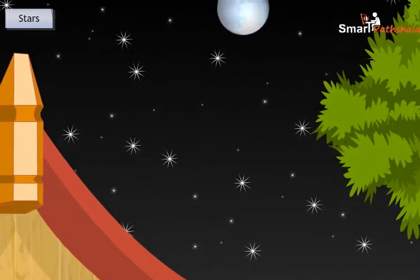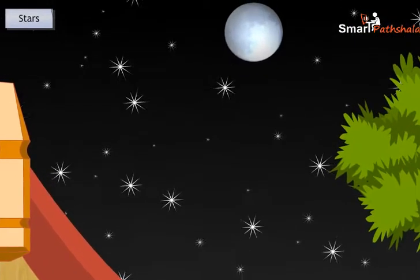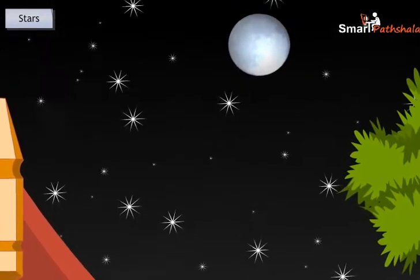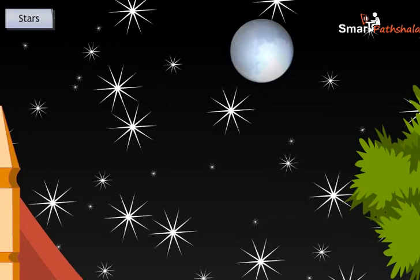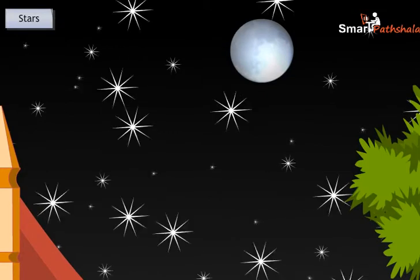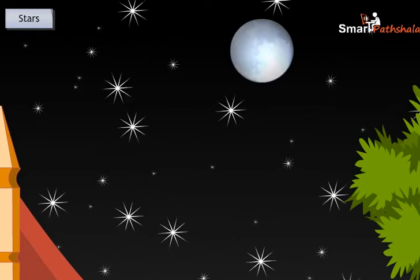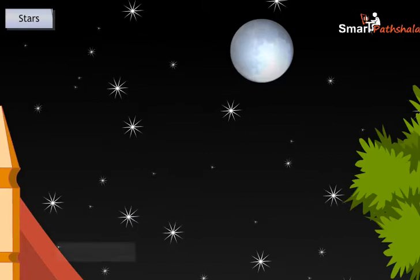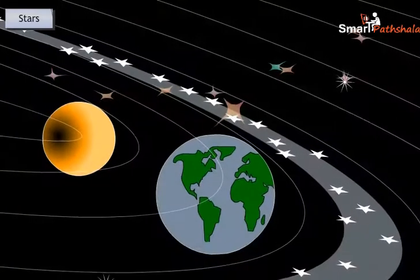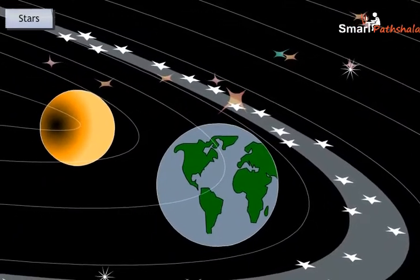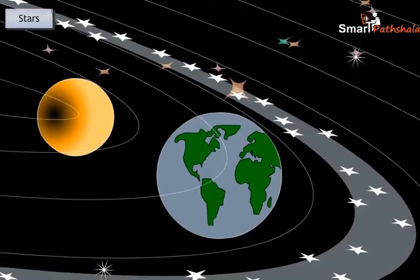However, we cannot count the stars as there are countless stars in the entire sky. Some of the stars are bright and some are not so bright. All the stars are self-luminous bodies — they emit light on their own, and we can find them twinkling. We also find that some star-like objects do not twinkle.